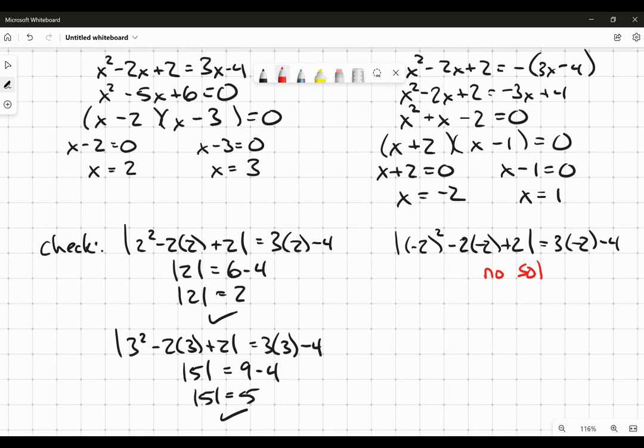The reason is that 3 times negative 2 is negative 6, minus 4 is negative 10. As soon as the right side becomes negative, I know that's not the result of an absolute value. So that doesn't work.